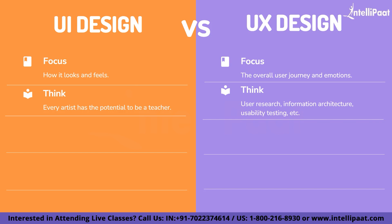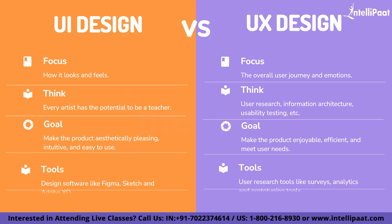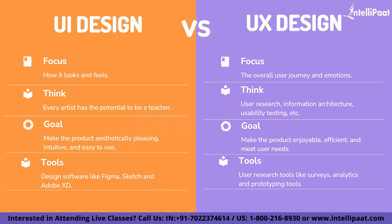In UX design, we think about user research, information architecture, usability testing and much more. The goal of UI design is to make the product aesthetically pleasing, intuitive and easy to use, while the goal of UX design is to make the product enjoyable, efficient and meeting user needs. Tools used in UI design include software like Figma, Sketch and Adobe, while UX design uses tools like surveys, analytics and prototyping.